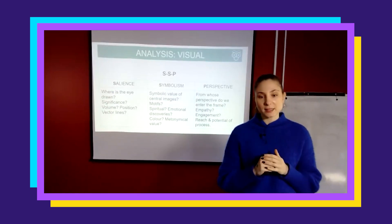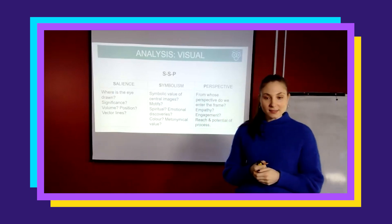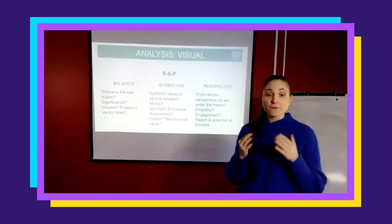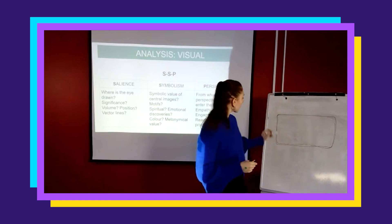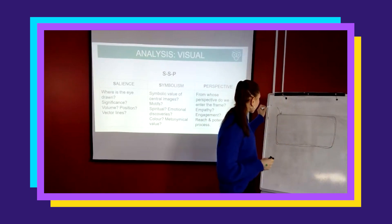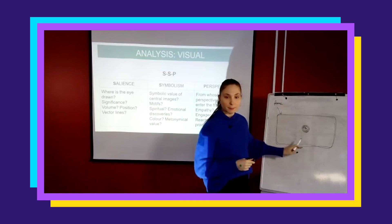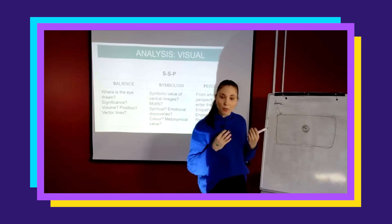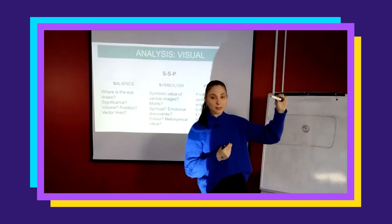Go-to techniques for visual texts — the first one is SSP. The first S is for salience. Salience is the focal point in the image. Always refer to the border of an image as 'the frame.' Within the frame, the point of salience is where your eye is drawn — in this visual, that's my black dot. When you identify something as salient, you need to unpack how that focal point has been rendered salient.